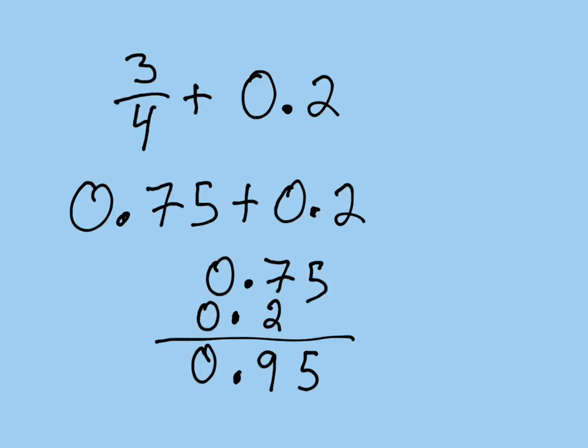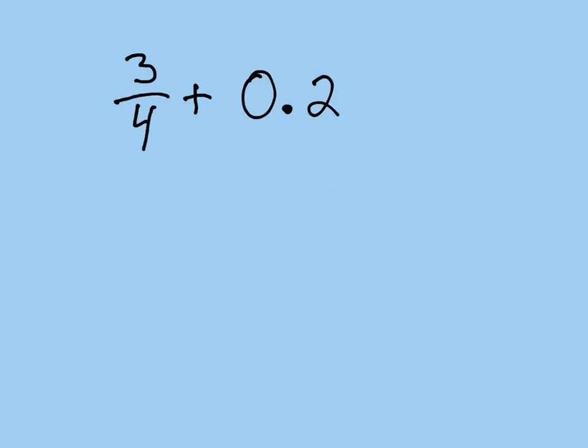If we wanted to, we could have done this by turning everything into fractions. 3/4 plus 0.2—this is equal to 1/5. If you don't remember how to do that, look at the previous video. So we get 3/4 plus 1/5. We have to make our little L chart. That goes into one time.